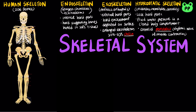Adult skeletons contain 206 bones. There are 26 bones in the spine, which consists of 7 bones in the cervical or neck vertebrae, 12 bones in the thoracic vertebrae, 5 bones in the lumbar vertebrae, a triangular bone called the sacrum, and the coccyx.